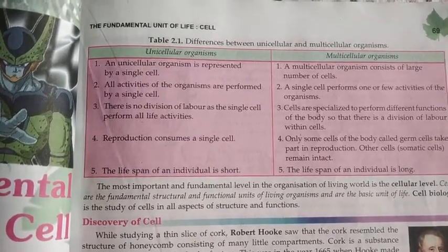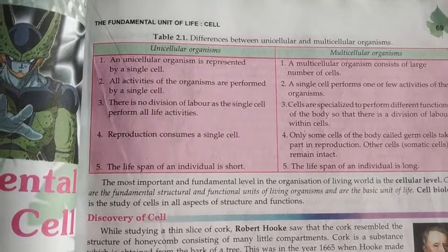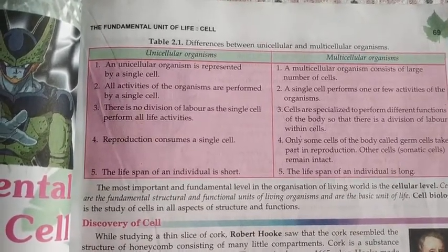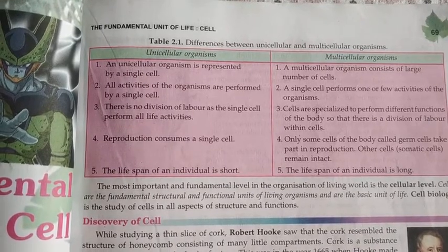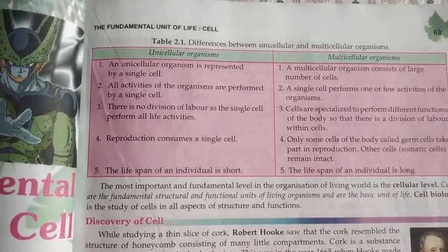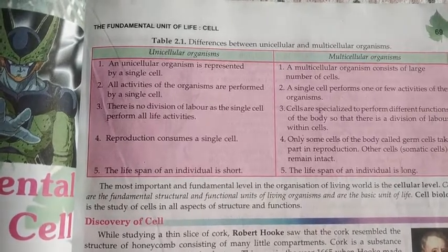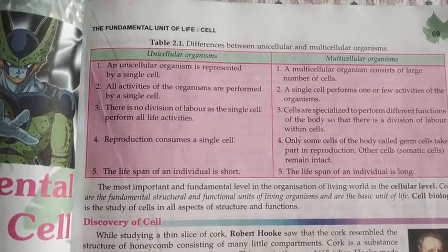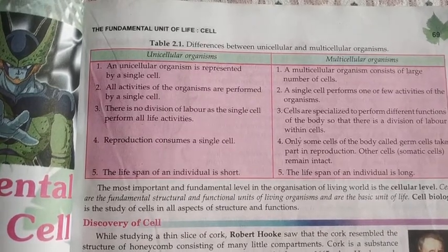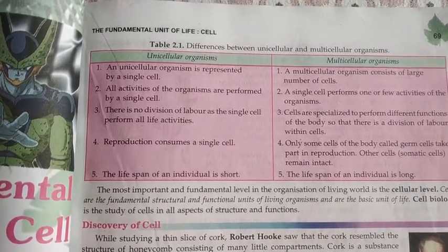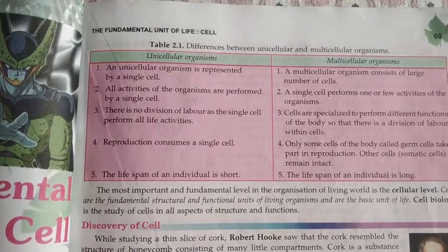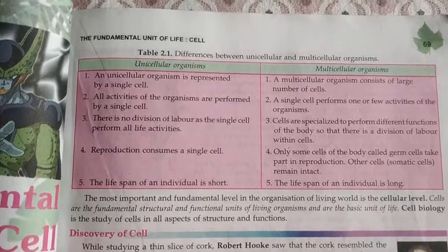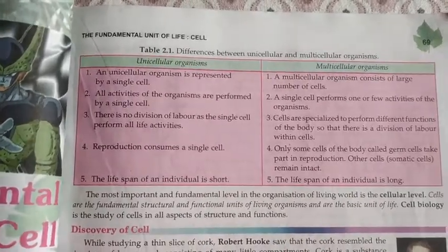The life span of an individual is short in unicellular organisms, whereas in multicellular organisms the life span is very long. Some organisms can live for 400 to 700 years, but the life span of unicellular organisms is totally different and very short.